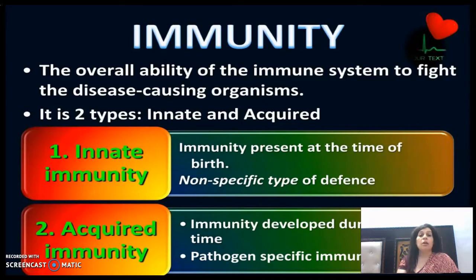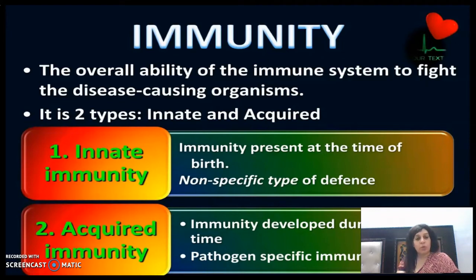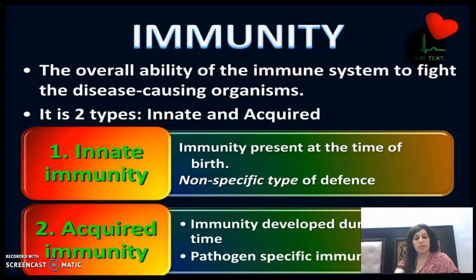Immunity the overall ability of the immune system to fight disease-causing organisms है। यह दो types की होती है: innate और acquired। Innate immunity वो है जो birth से होती है, यानी जो हमारे पैदा होने के साथ ही body में होती है। Acquired immunity वो है जो हमने lifetime में acquire की है। Innate immunity non-specific type of defense है, whereas acquired immunity is pathogen-specific immunity.